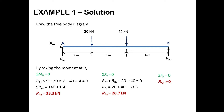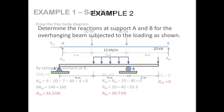Now applying the third equation of static equilibrium, summation of forces in the horizontal direction equal to zero. There is only one force — support reaction RAX — and no other horizontal forces, so RAX = 0. In this way we have found all three support reaction values. Now we proceed to our second question.